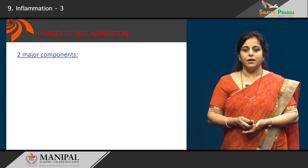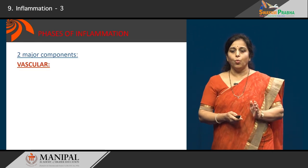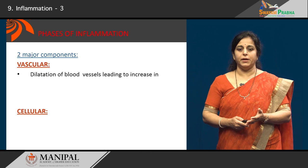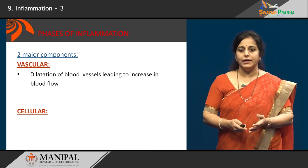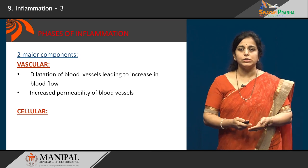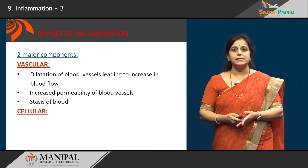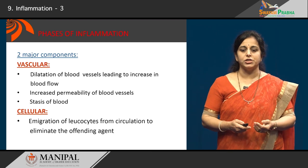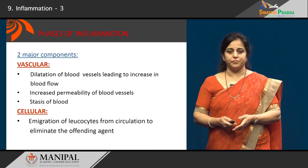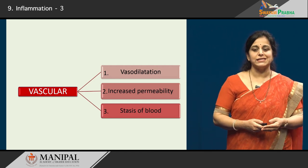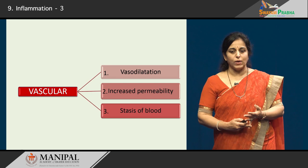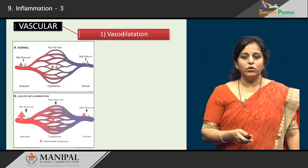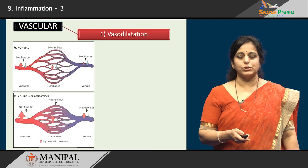What are the phases of inflammation? There are two major phases: the vascular phase and the cellular phase. In the vascular phase, three major events occur: number one, vasodilatation; number two, increased vascular permeability; and number three, stasis of the blood. In the cellular phase, we see emigration of leukocytes from circulation to the site of the offending agent. Let us look at the vascular events in more detail — the first event is vasodilatation.